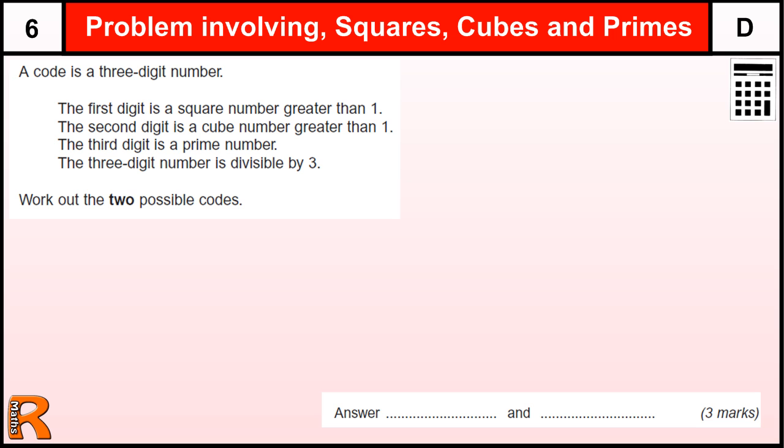The problem involving squares, cubes, and primes, a grade D type question. A code is a three-digit number. The first digit is a square number greater than 1.